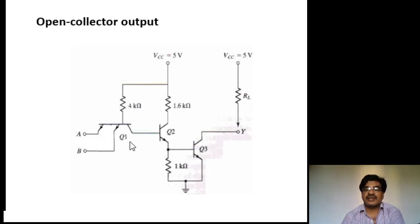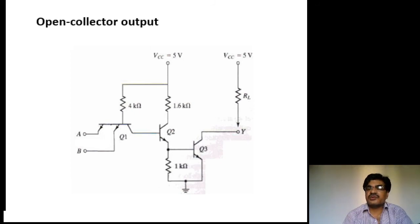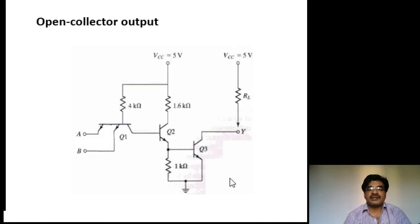This circuit satisfies the truth table of the NAND gate. If you are not using the external resistor, then during logical high case the output remains open. In order to pull up the output voltage properly, an external resistor must be connected between the output terminal and power supply Vcc.